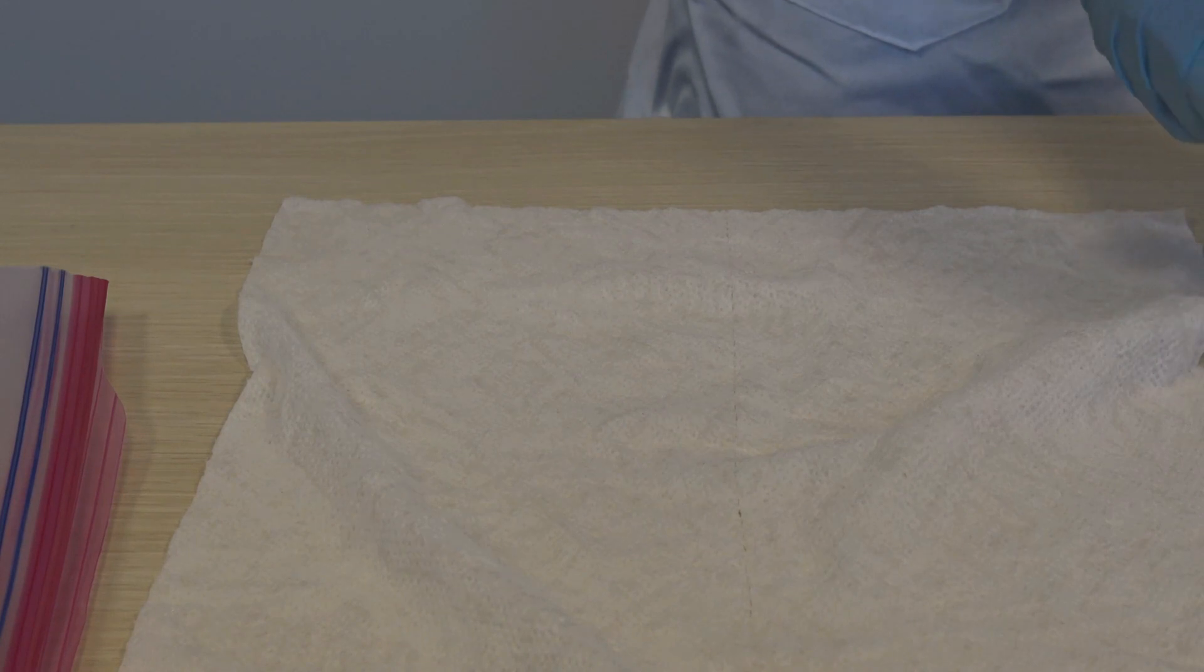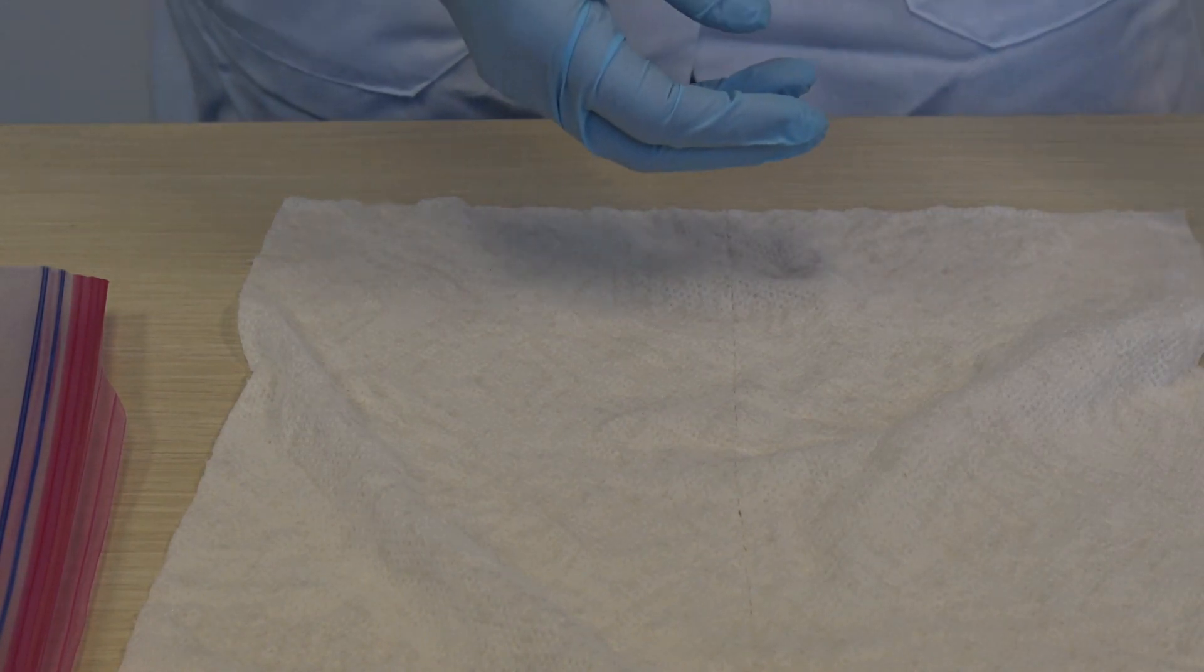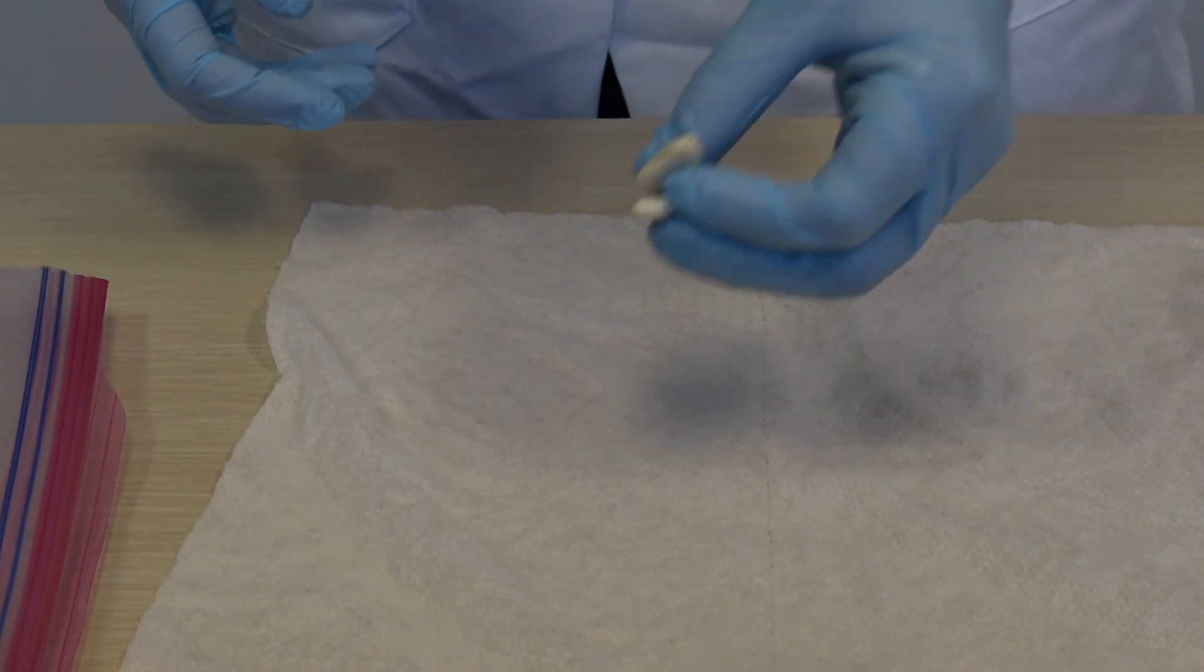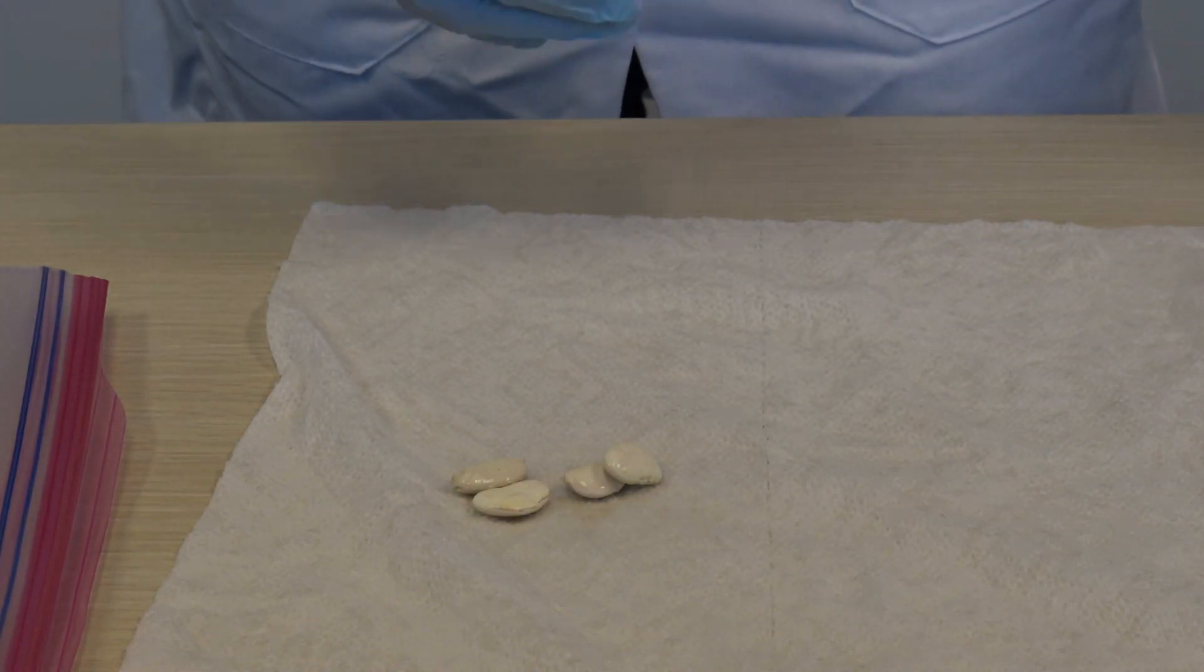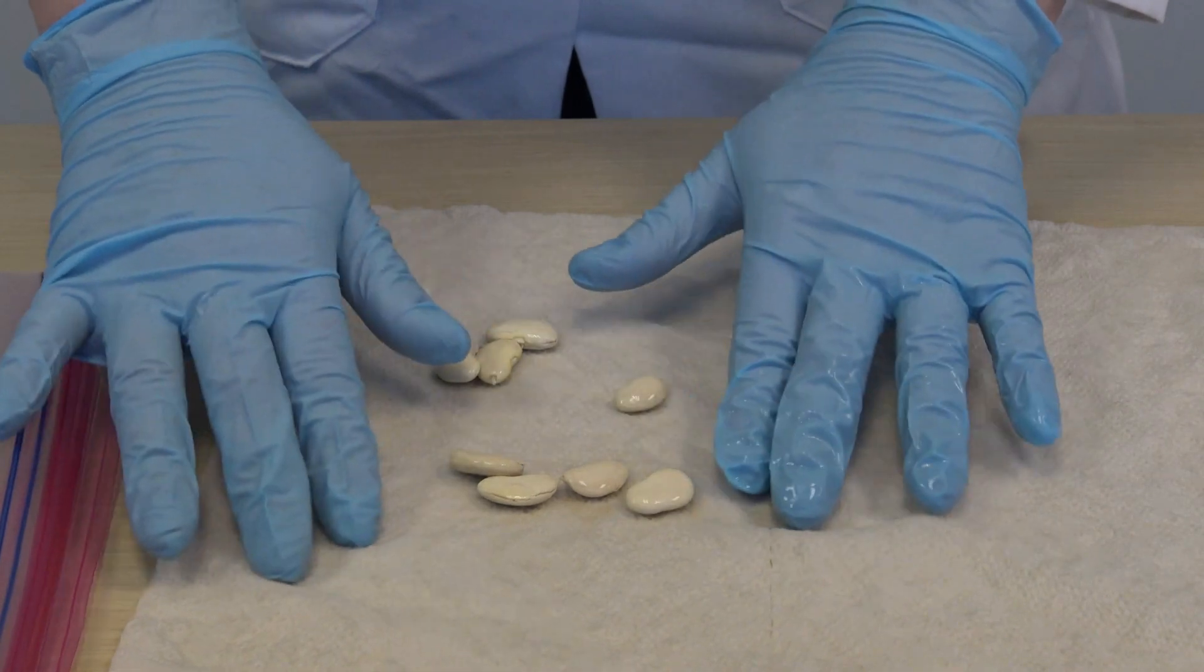Take your soaked bean seeds from your plate or wherever you had them and sprinkle them on the damp paper towel, making sure they're in a single layer.